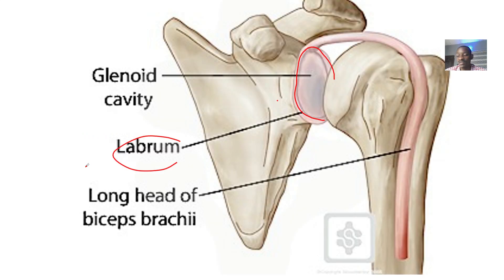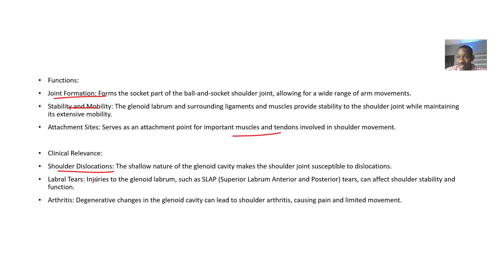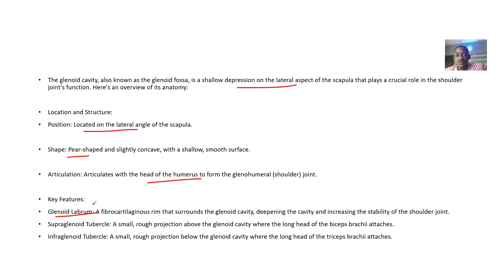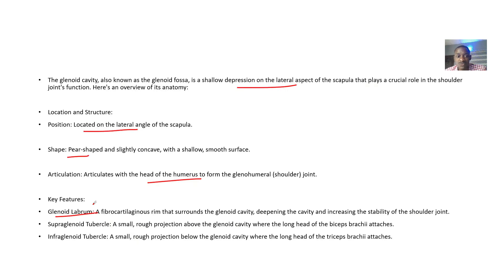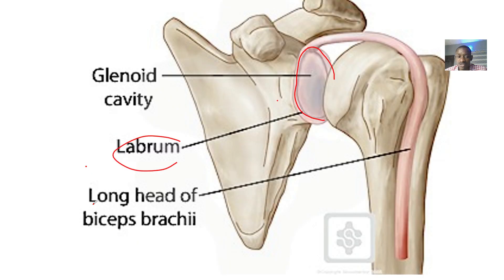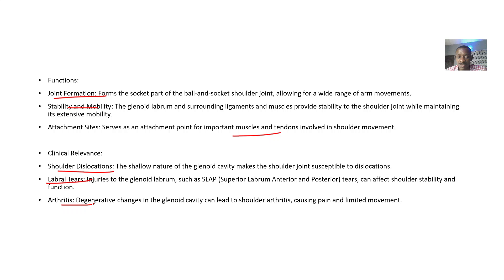For clinical relevance, knowing the anatomy of the glenoid cavity helps understand conditions such as shoulder dislocation, labral tears, and arthritis. That covers the anatomy of the glenoid cavity — location and structure, key features, functions, and clinical relevance.